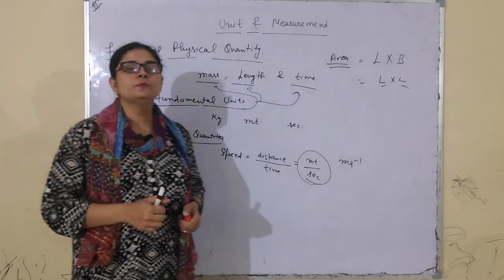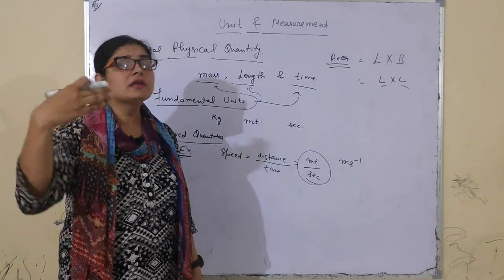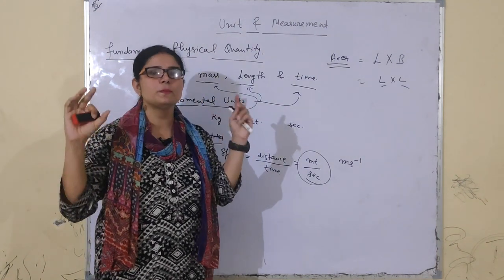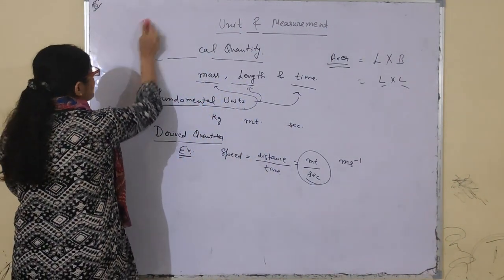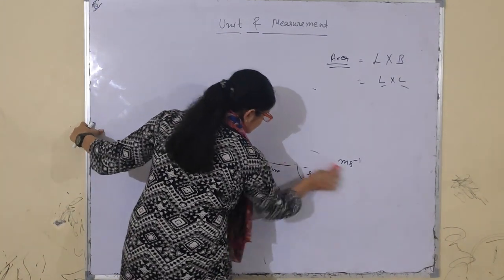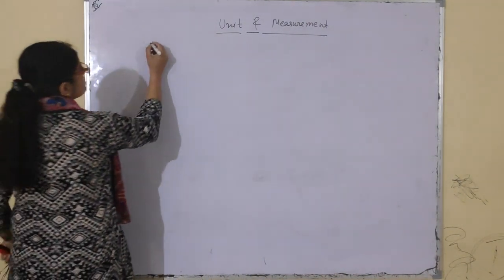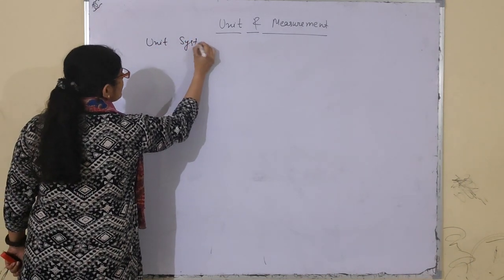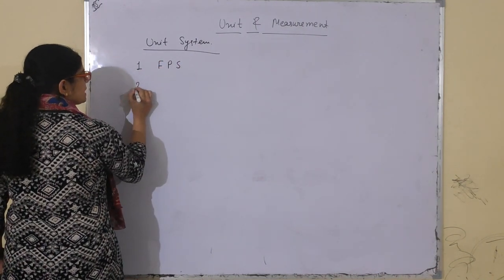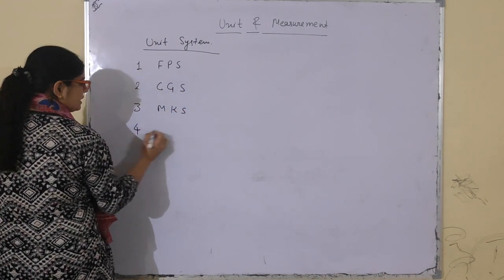Unit ek standard hai jo hum kisi bhi measurement ke liye use karte hain. Ab unit kitne type ki hoti hain — unit systems: first is FPS, second is CGS, third is MKS, and fourth one is SI.